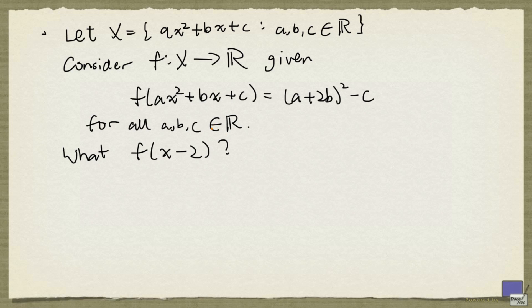What is f(x - 2)? Well, x - 2 is certainly in the set X if we rewrite x - 2 in the form ax² + bx + c. So there's no x² term, so we can say this is 0 times x². And x is 1 times x. And minus 2 can be written as plus negative 2.